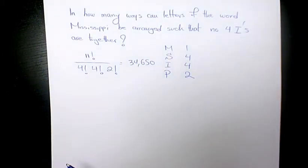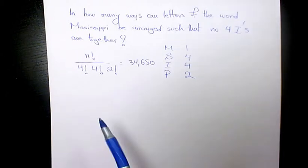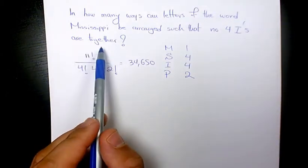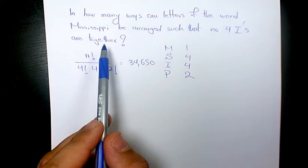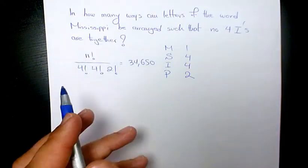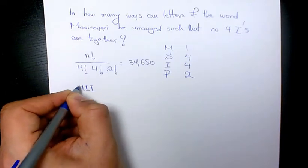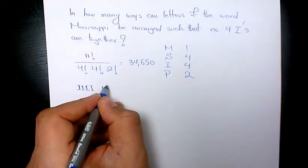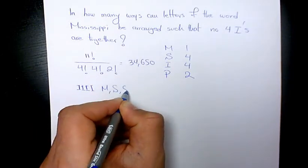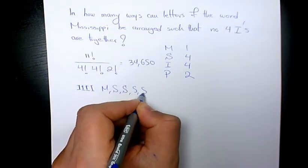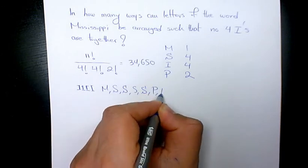Now, I want to find out how many different ways we can arrange this word Mississippi when we have all four I's arranged together. So it's going to be like that: four of them together and after that we have M, S, S, S, S, P, and P.